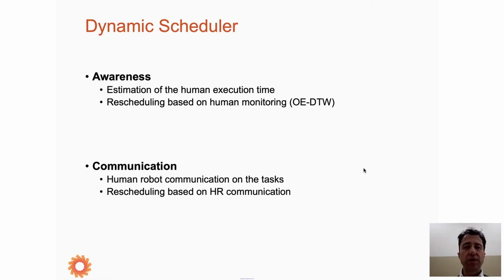Given the awareness on how much time the human really takes for executing the task, it reschedules the activities to maximize efficiency while preserving a certain level of job quality. The human can communicate with the robot. For example, I may be very skilled in executing a certain task that is nominally assigned to the robot, and I want to tell the scheduler, hey, I want to do that. The scheduler rearranges all the tasks to provide me with the task I want to execute.